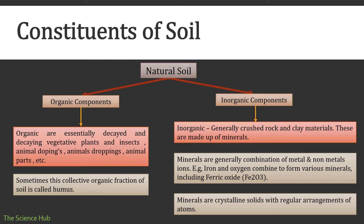Now we will see what are the constituents of soil. Soil is composed of organic components and inorganic components. Organic components are essentially decayed and decaying vegetative plants, insects, animal droppings, and animal parts. This collective organic fraction of soil is called humus. Inorganic components include generally crushed rock and clay materials, which are made up of minerals — a combination of metal and non-metal ions. For example, iron and oxygen combine to form various minerals including ferric oxide.